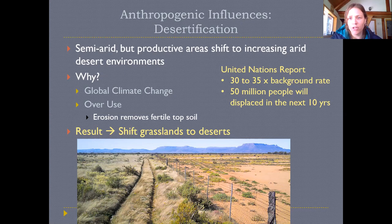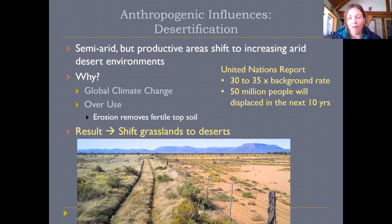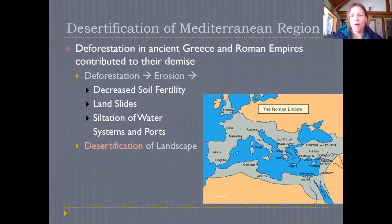This is widely concerning — a United Nations report from a few years ago said desertification is happening at 30 to 35 times the background rate, and projected that 50 million people will be displaced because of this process. In areas like Syria and Iraq, part of the political strife has resulted from rural people whose lands are rapidly desertifying moving into urban areas, because they can no longer support themselves on these changing landscapes, leading to significant conflict.